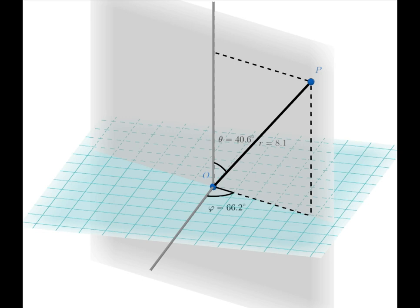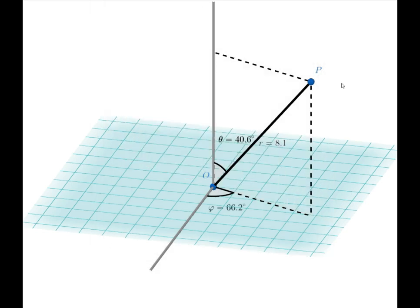Let me get rid of the plane so we can see it better. Okay, now as I move the point P around, again, the door swings and the value of phi changes.